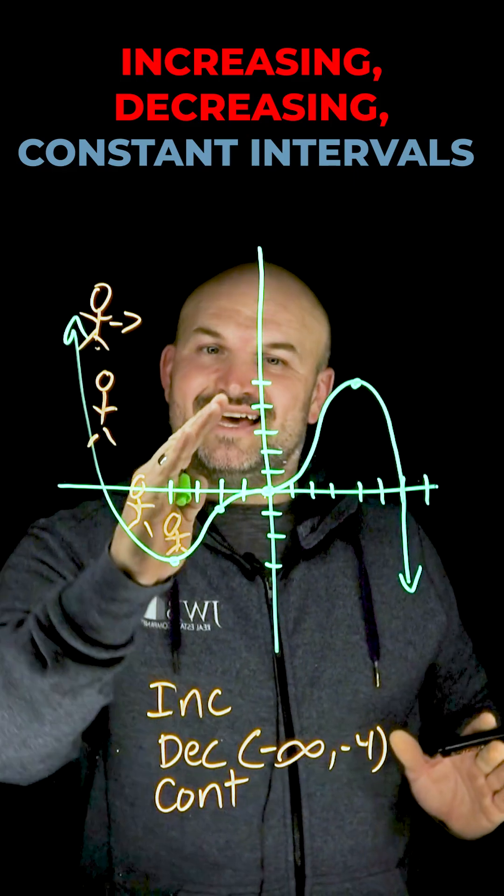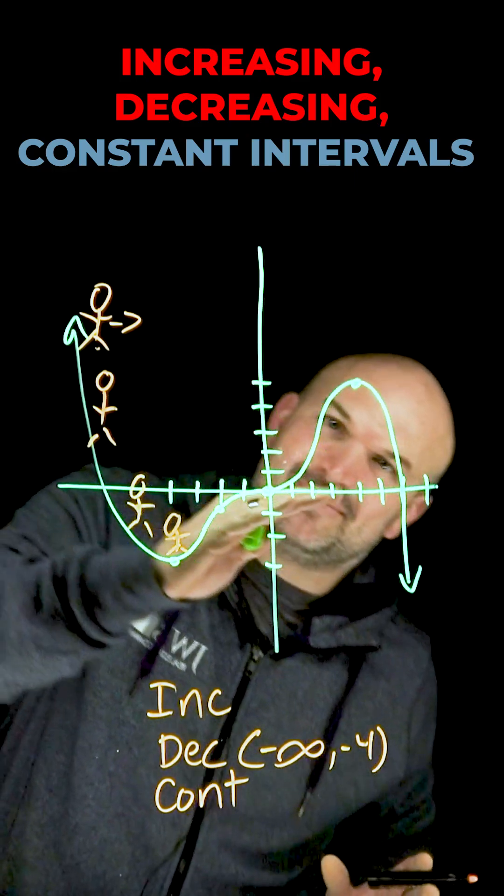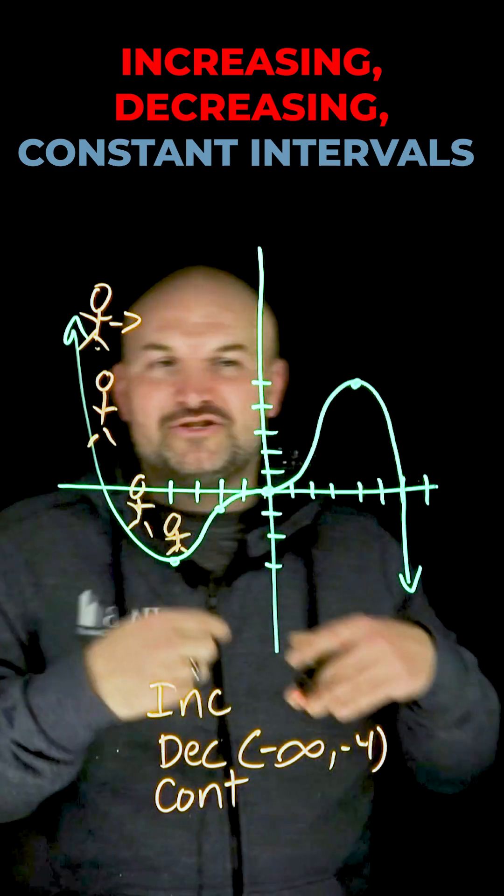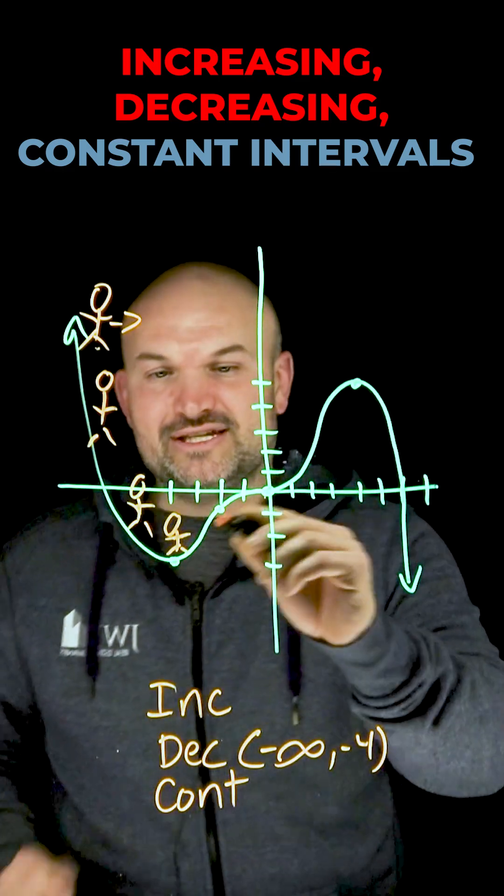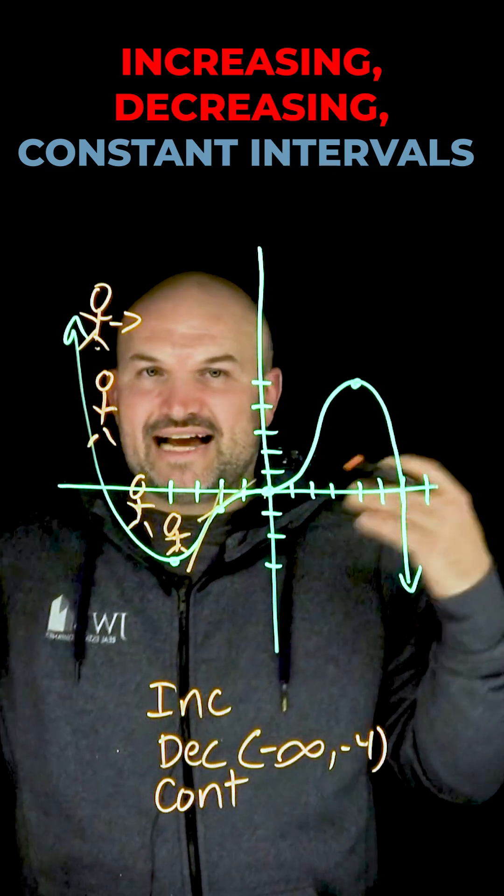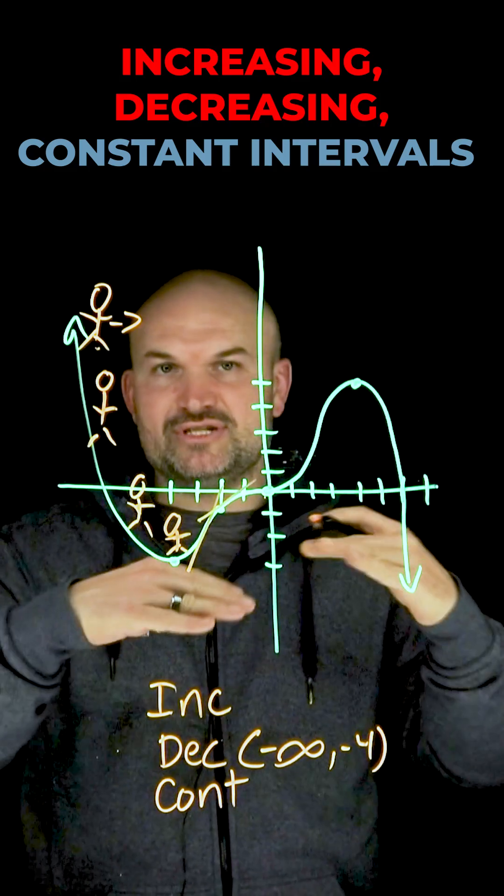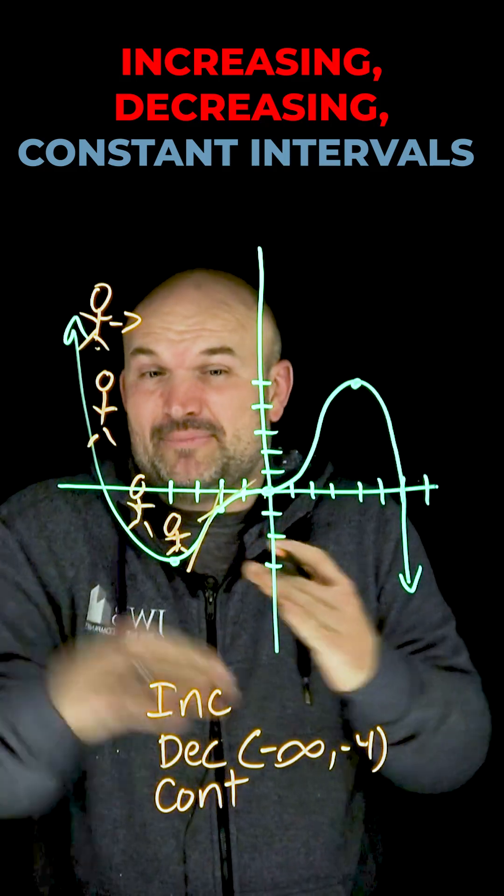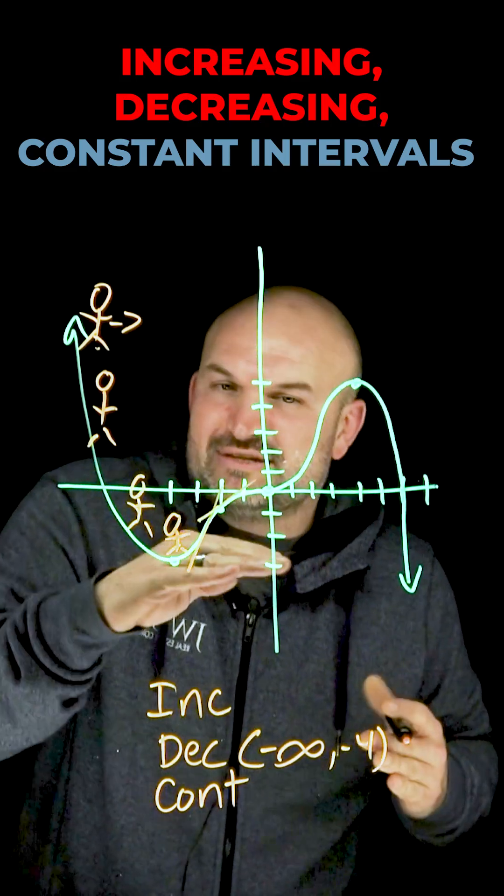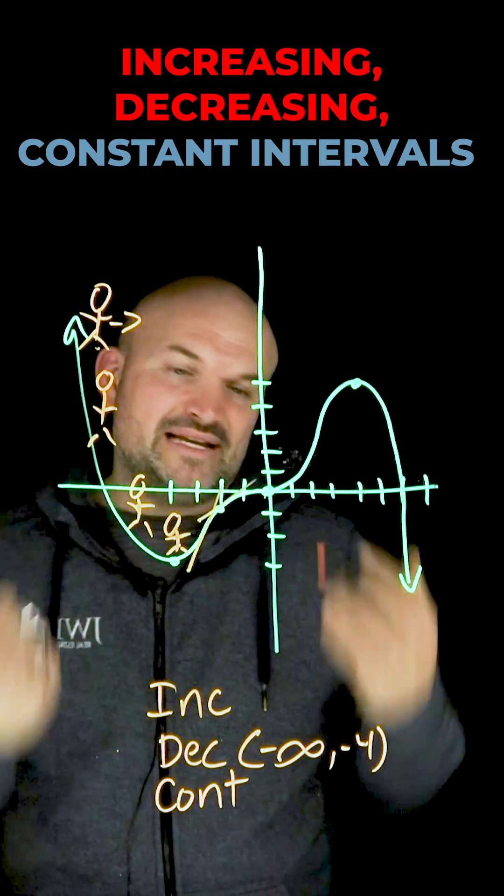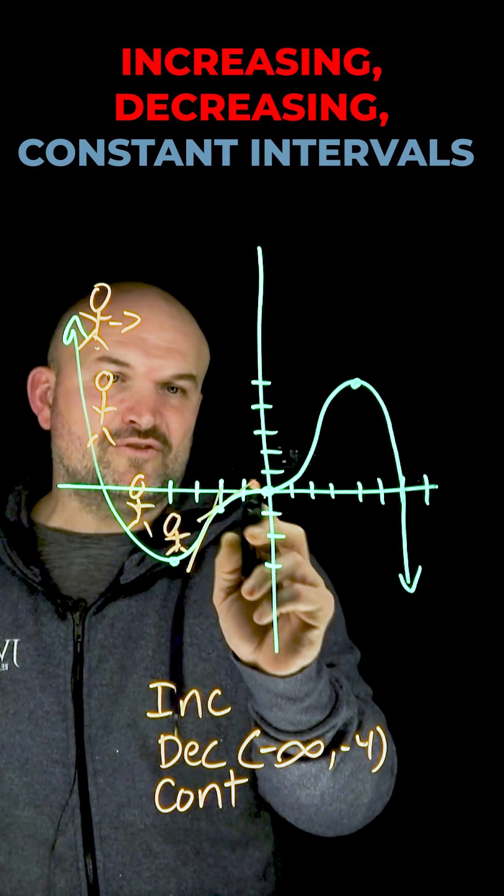We're going up really, really fast, and then we're slowing down. Then we're going really up, and then we're slowing down. So the rate of change, the slope is changing. However, what is actually happening with the height that this person is experiencing? They're still going up. If they're going up really, really fast or really, really slow, they're still going up.